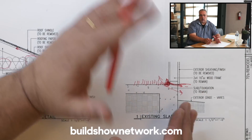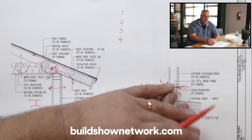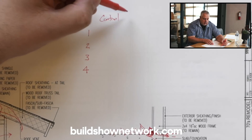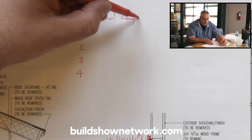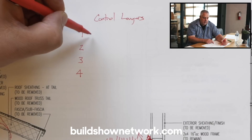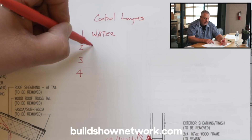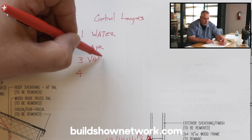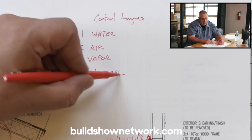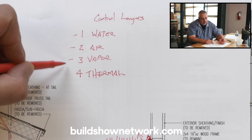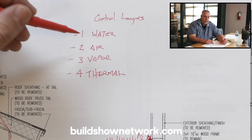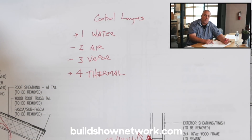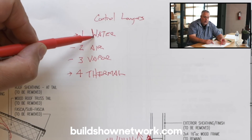So let's talk about control. How do I gain control? I need this series of priorities — what we call control layers. Control layers are simply: water, air, vapor, and thermal. I distinctly place them in order one through four, meaning one is the highest priority and four is the lowest priority.